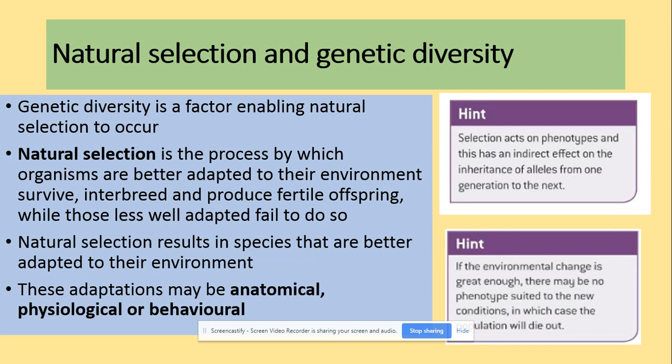Natural selection and genetic diversity — genetic diversity is the factor enabling natural selection to occur. Natural selection is the process by which organisms better adapted to their environment survive, interbreed, and produce fertile offspring, while those less well adapted fail to do so. Natural selection results in species better adapted to their environment, and those adaptations could be at the anatomical, physiological, or behavioural level.